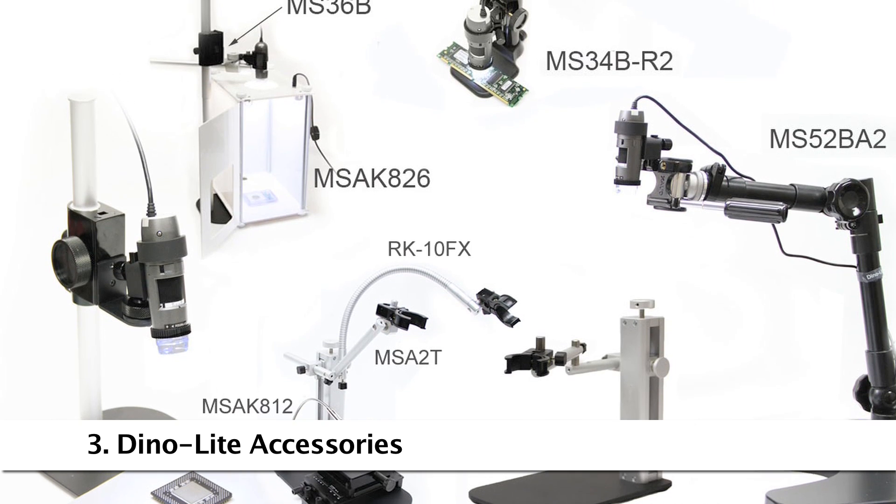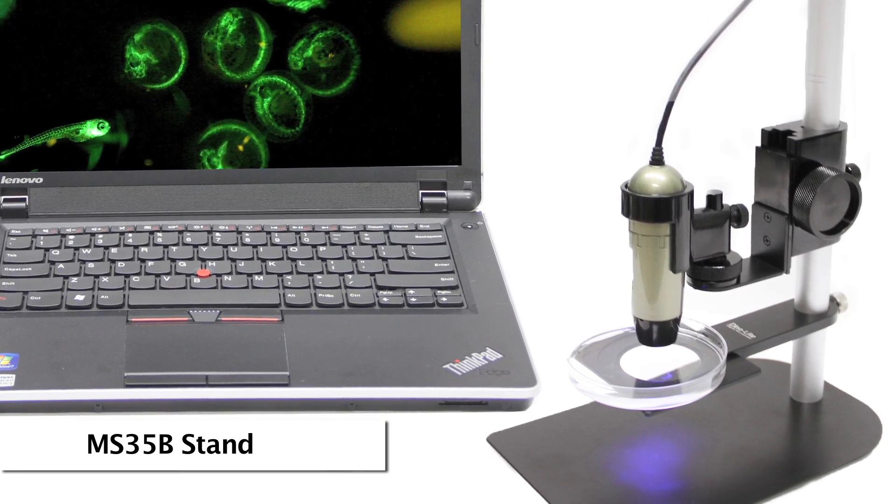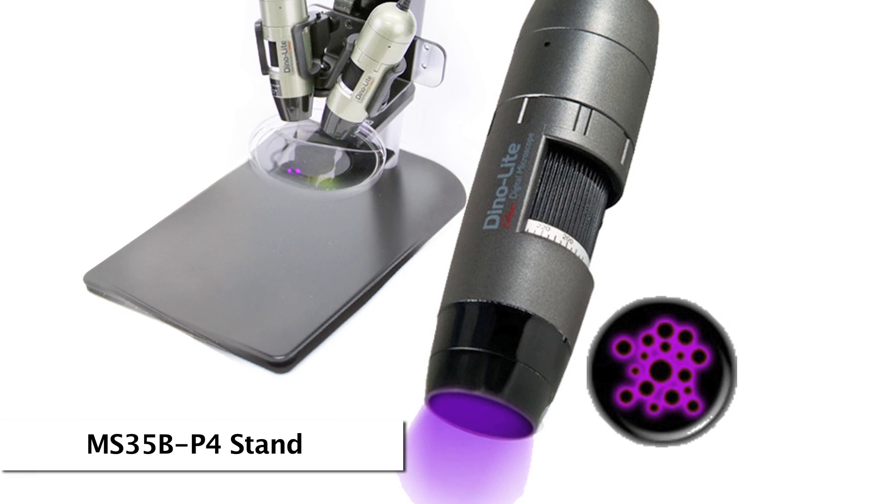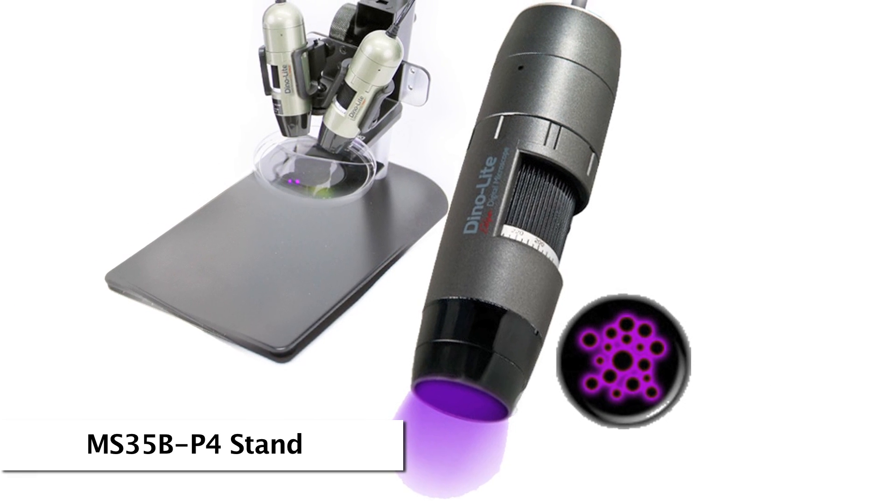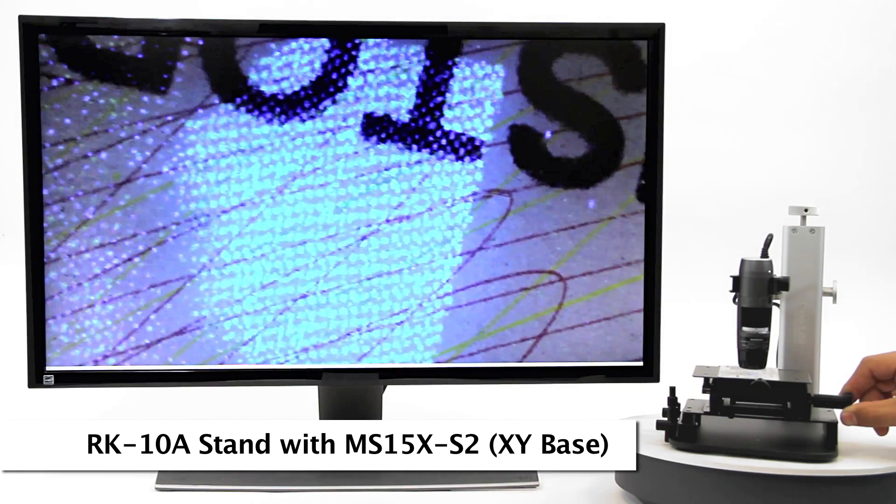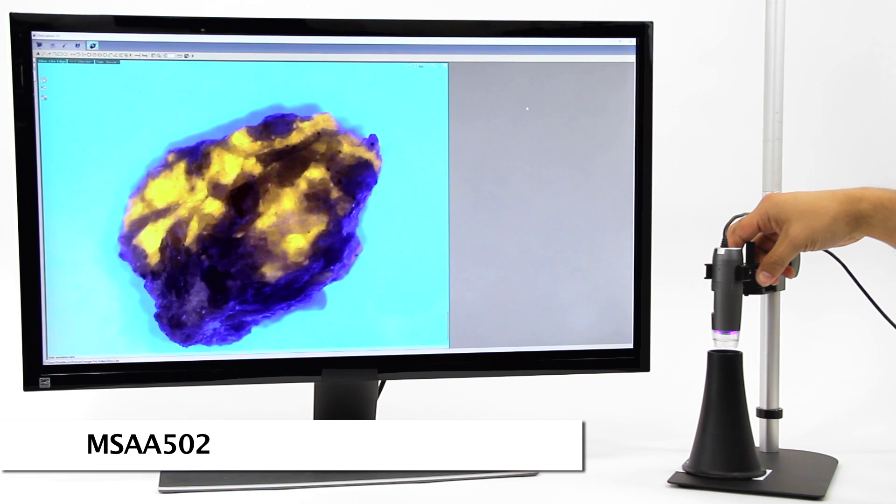Here are some recommended compatible accessories. The MS35B is a tabletop stand with fine adjustment. The MS35B P4 version is modified for dual comparison. The RK10A features a fine adjustment knob and a quick release button. The MSAA502 is great for eliminating outside light.